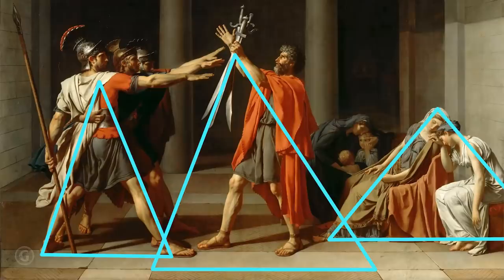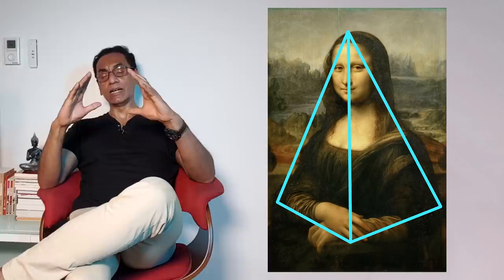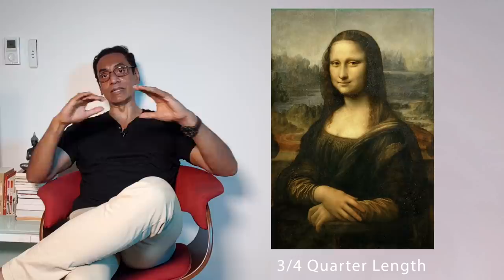Leonardo used a classic pyramidal composition. The Renaissance favored this classic pyramid shape. In the first part of this composition, the subject became the pure center of focus. This is evident in the Mona Lisa portrait, which uses the three-quarter length format. This was groundbreaking because it placed the subject prominently in the frame.